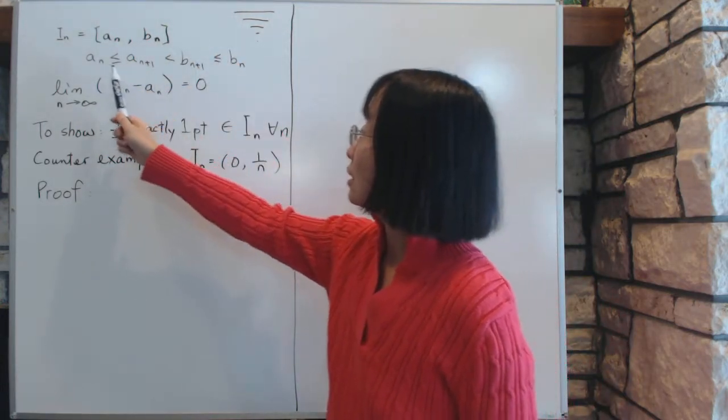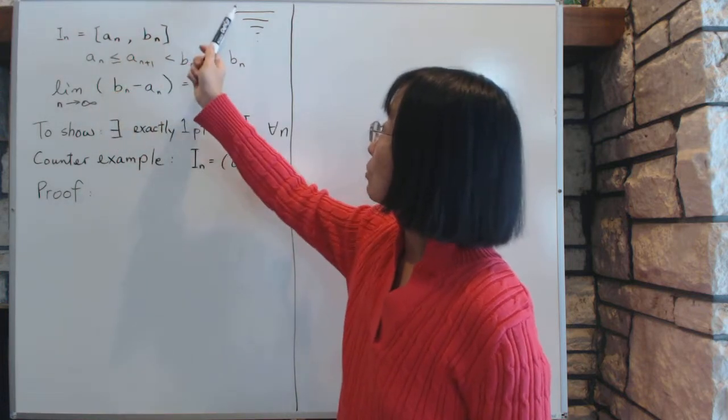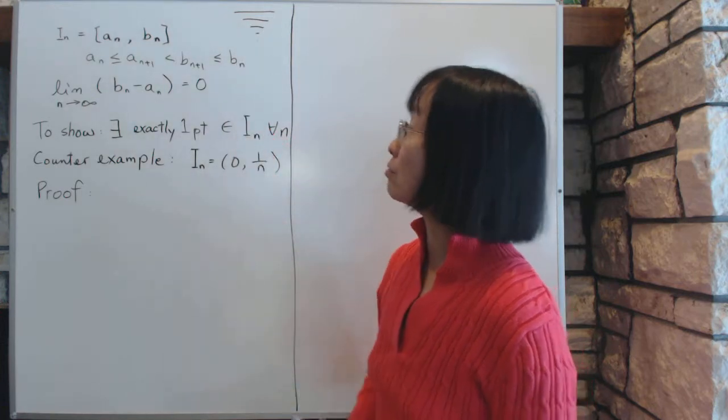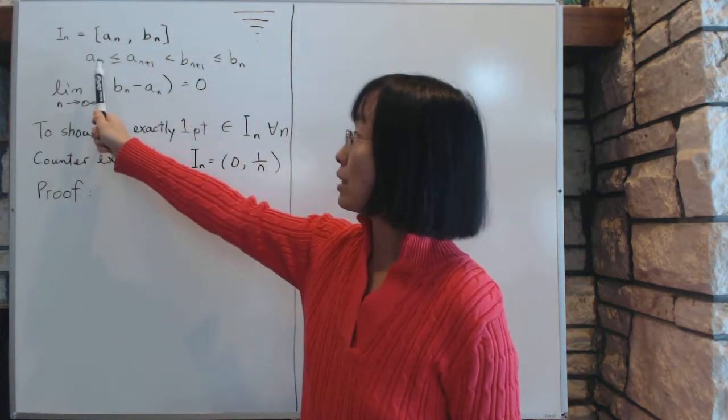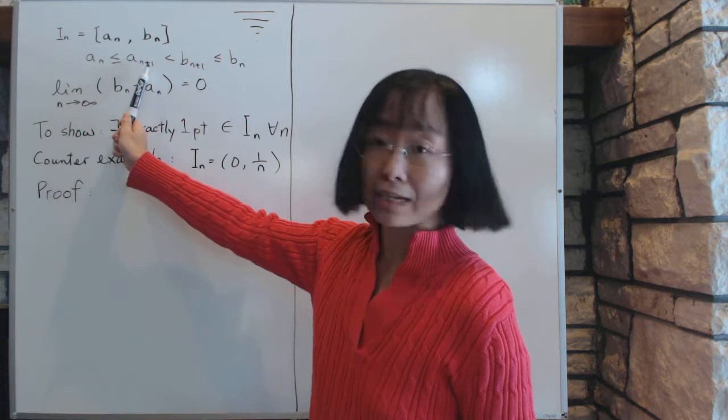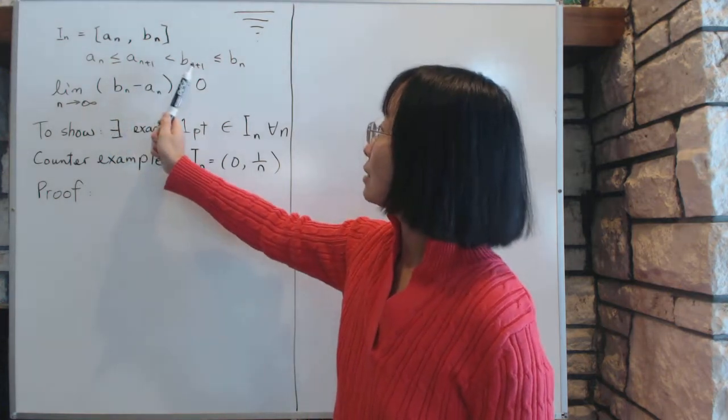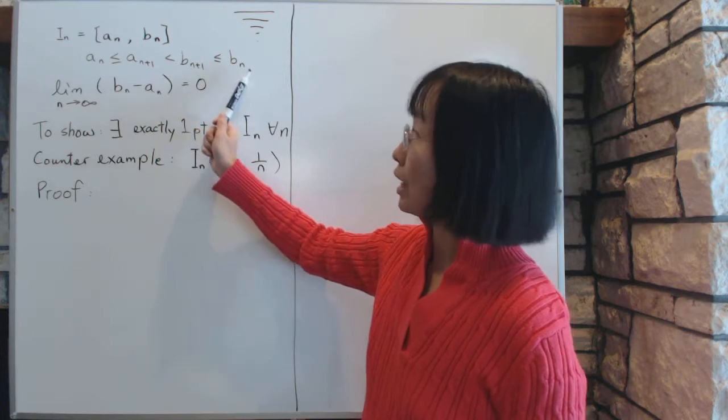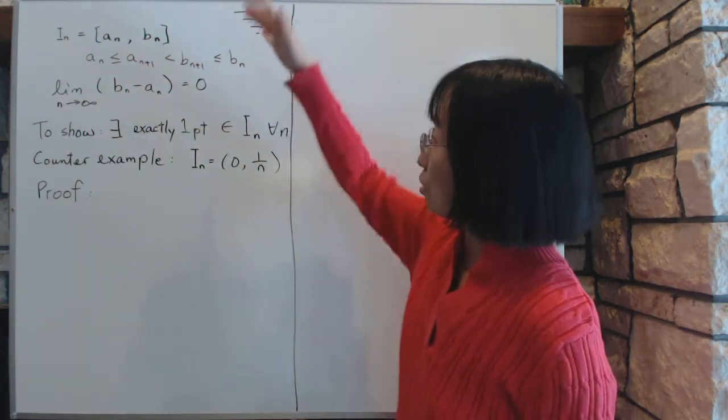Each interval, the first interval completely contains the second one, which then completely contains the third one. Or mathematically, we say a_n is going to be less than a_{n+1}, which is always less than b_{n+1}, which is less than or equal to b_n. And this condition always exists.